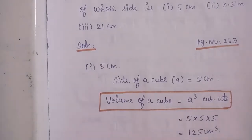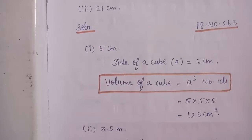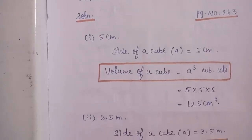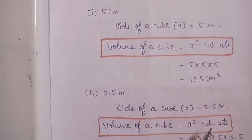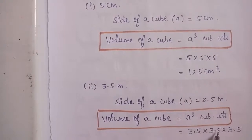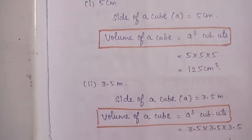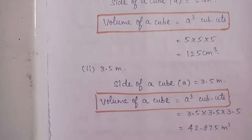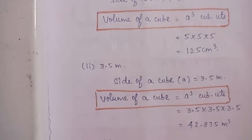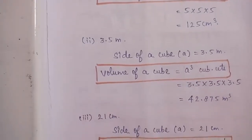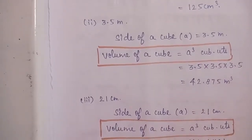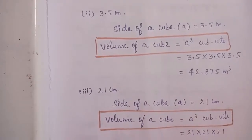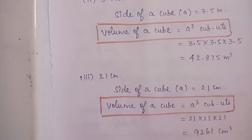For the second subdivision, side a = 3.5 m. Volume = 3.5 into 3.5 into 3.5 = 42.875 m cube. For the third subdivision, side a = 21 cm. Volume = 21 into 21 into 21 = 9261 cm cube.